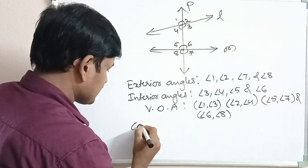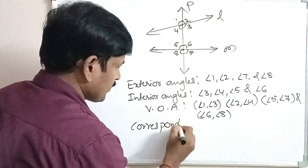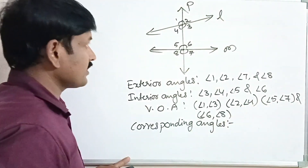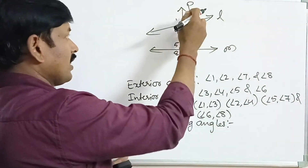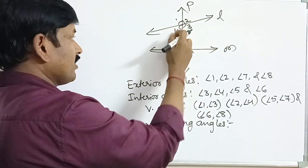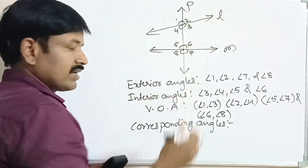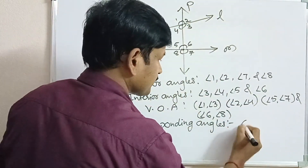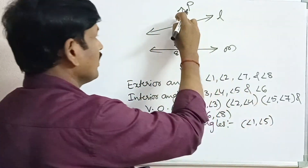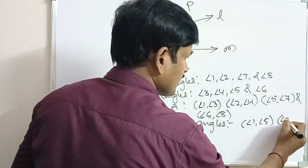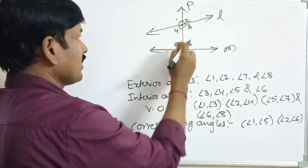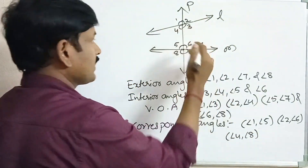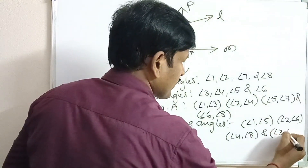Next, let us observe corresponding angles. What are corresponding angles? Angle 1 and angle 5, angle 2 and angle 6, angle 4 and angle 8, and angle 3 and angle 7 are the pairs of corresponding angles.